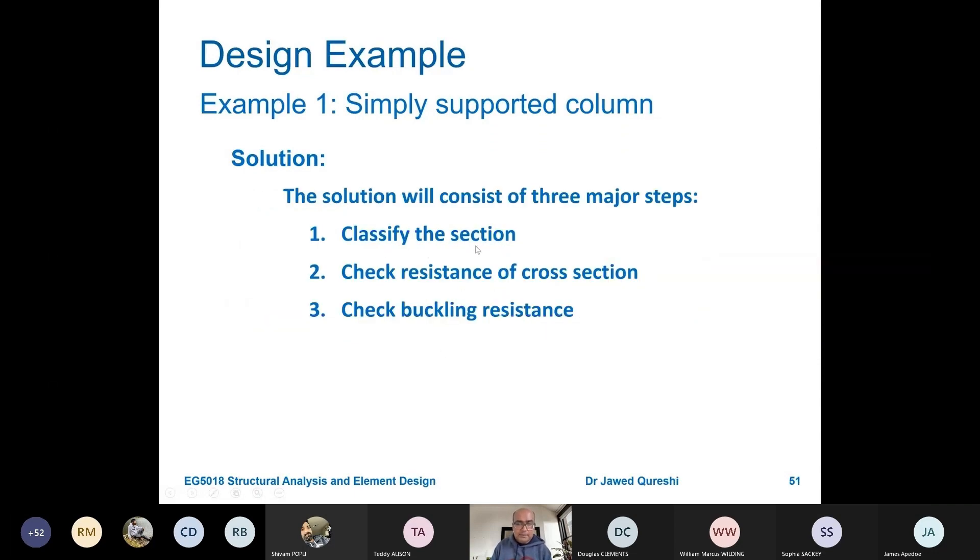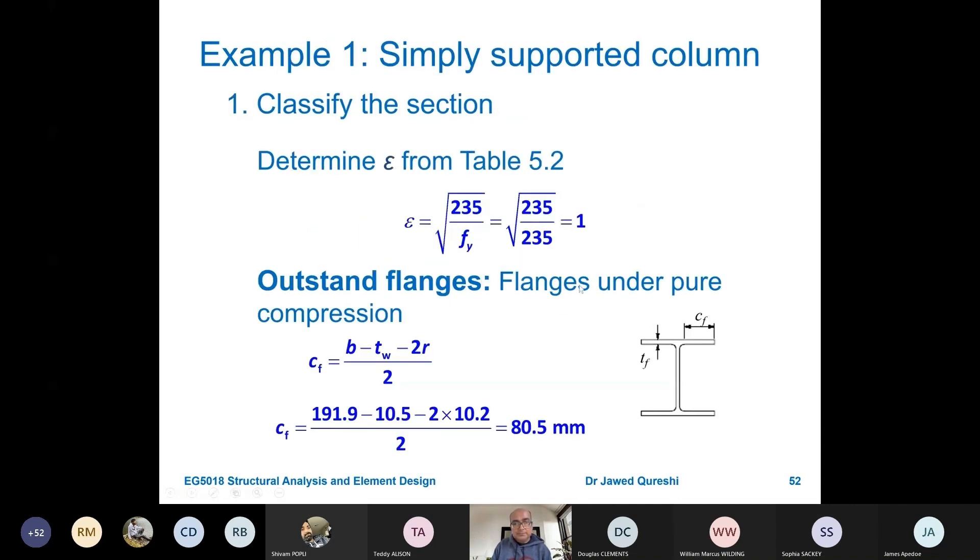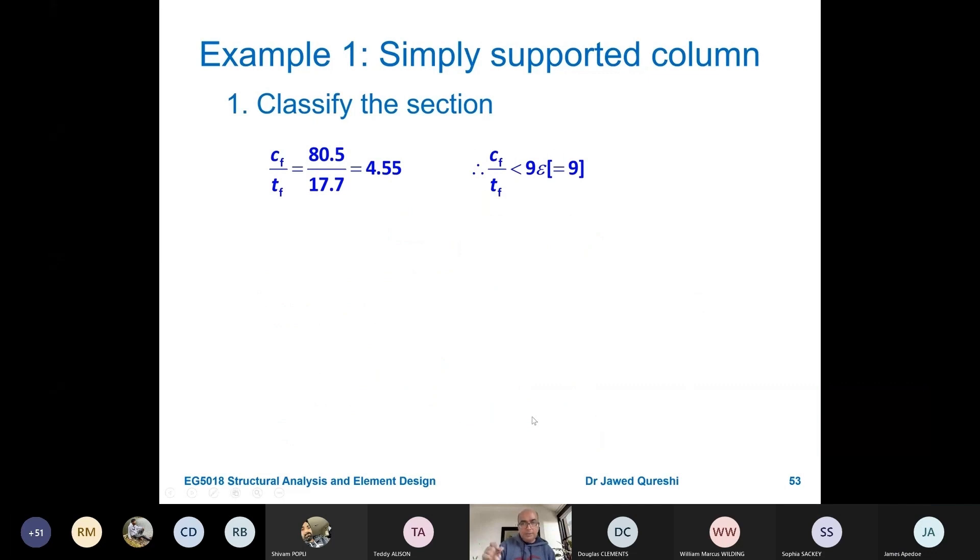First thing is that we have to classify the sections. Then we have to determine if the buckling check is required or not. But here we are checking cross-sectional resistance anyway, and then we check the buckling resistance. How do we classify the section? First we determine epsilon. It happens to be that we are using S275, so that's why this is coming out to be one. We use these properties from the section table. We work out C_F, or for practical purposes you can work out C_F over T_F directly from the section table. So if you compare it for this section, go away and compare it with the section table, you will have the same value. The limit for first class is nine, nine times one.